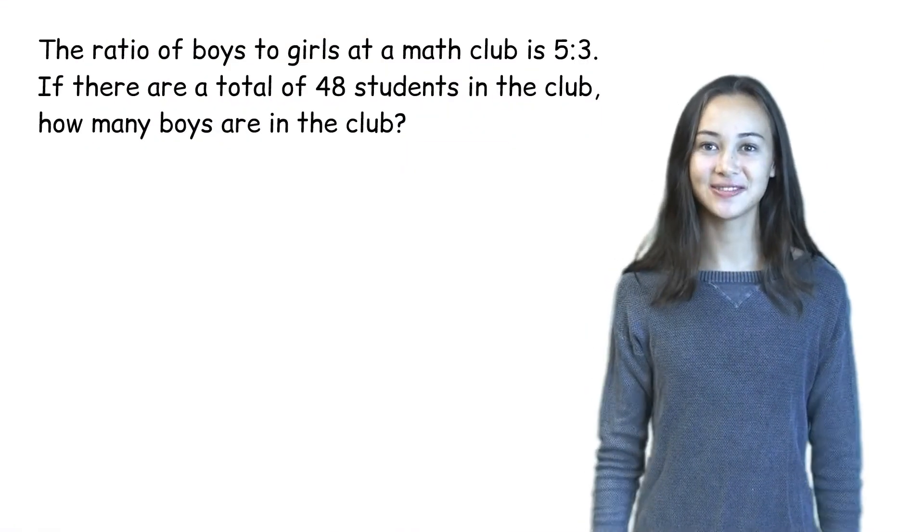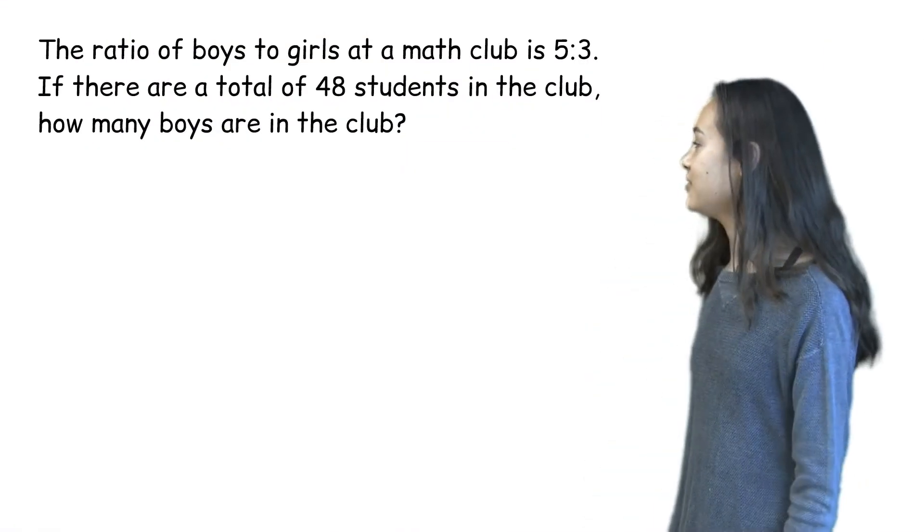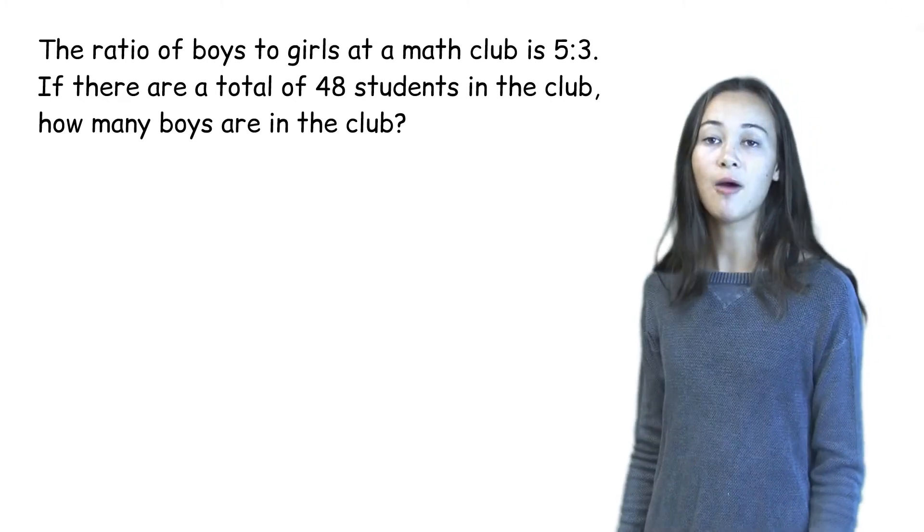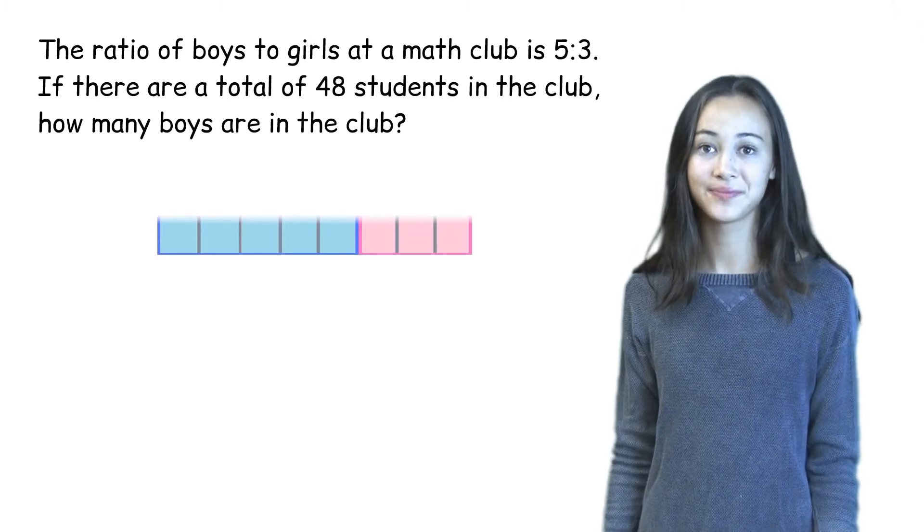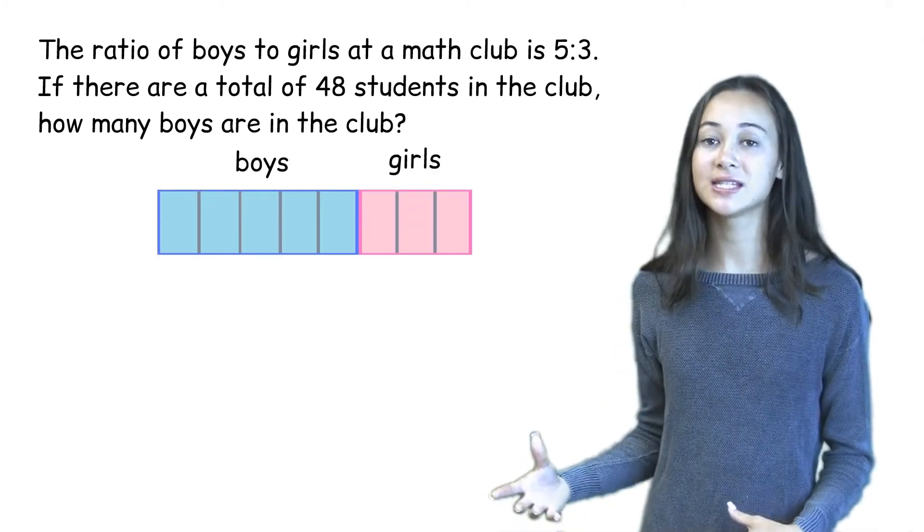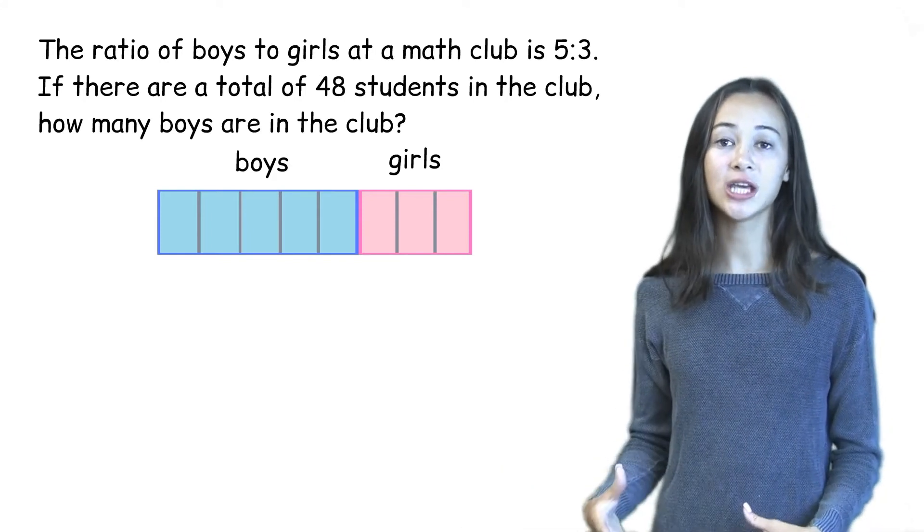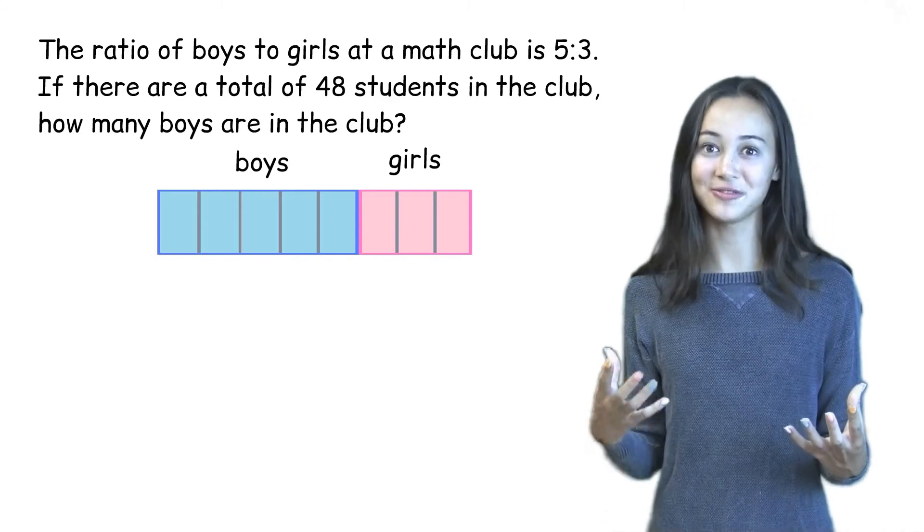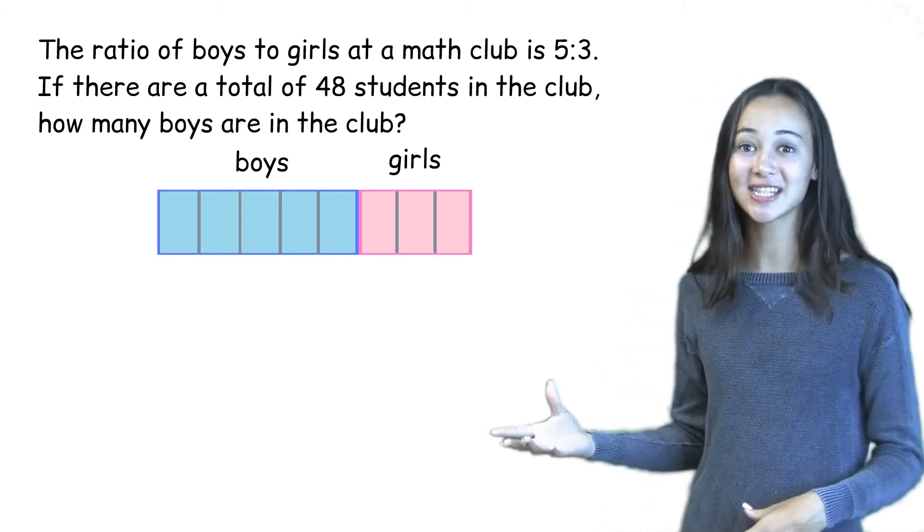Now let's look at another question. If the total number of students in the math club is 48, how many boys will there be in the club? So since we have the same ratio, we can keep the same diagram. But now we're going to be looking for the relationship between the number of boys and the total number of students. Let's look at the diagram.